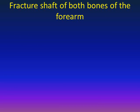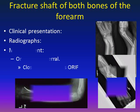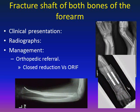Fractures of both bones of the forearm are common in children, usually from falling on an outstretched hand. The patient presents with pain, swelling, and deformity of the affected forearm. X-rays show fractures of both radius and ulna with angulation. Management requires orthopedic referral — treatment will be either closed reduction or open reduction. With open reduction, fixation can be with flexible intramedullary nails or plate and screws.